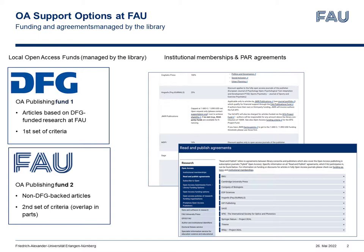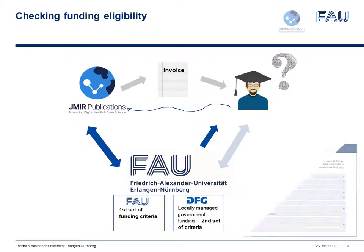Some of these criteria are informed by the DFG and some are our own. One fund has a cap on how high an APC can be and the other one doesn't. So in itself that doesn't sound too complicated, but the devil is in the application of the criteria. Figuring out whether a specific paper is fundable isn't straightforward at the minute.